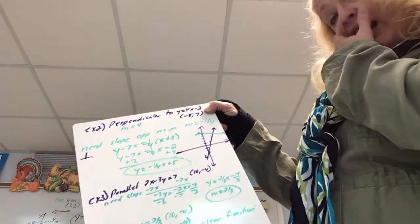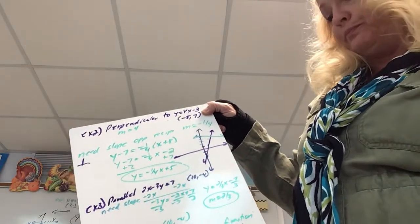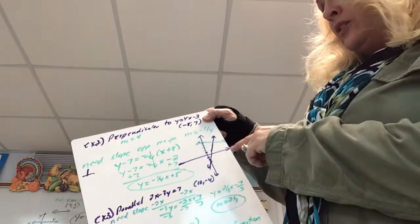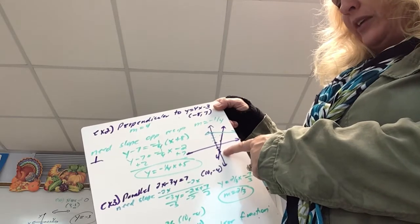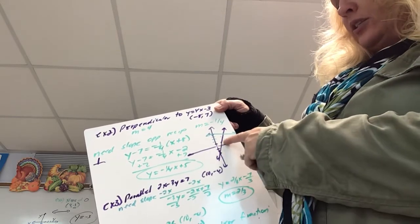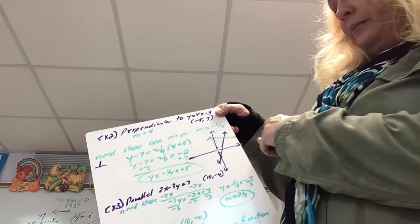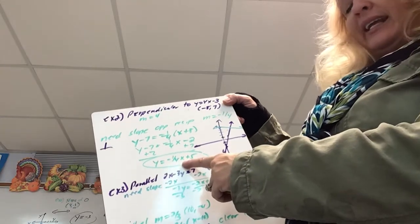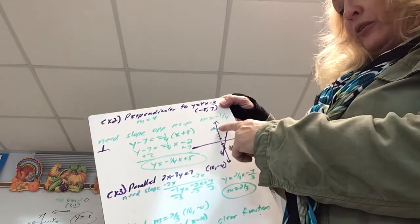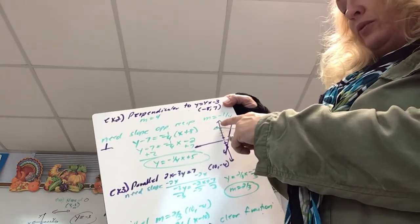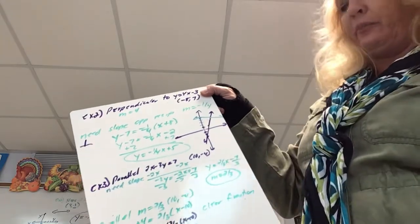I went ahead and graphed this to show how they end up being perpendicular. My first equation is in purple: y-intercept 0, negative 3, slope of 4, up 4, right 1. The line I found has a y-intercept of 0, 5, slope of negative one-fourth, so down 1, right 4. We can see they are perpendicular.